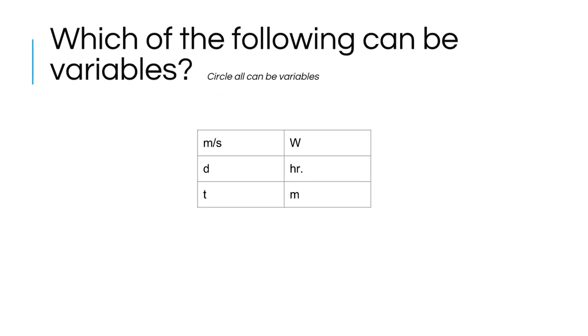Take a minute with this one: which of the following can be variables? Go ahead and pause the video right now. If you circled W, d, t, and m, you're correct. They can all be variables because they're only one letter. Remember, if you have m/s in an equation, it looks like the mass is being divided by s, and with hr, it looks like h is being multiplied by r. So we have to be careful that we're only using things that are one letter.